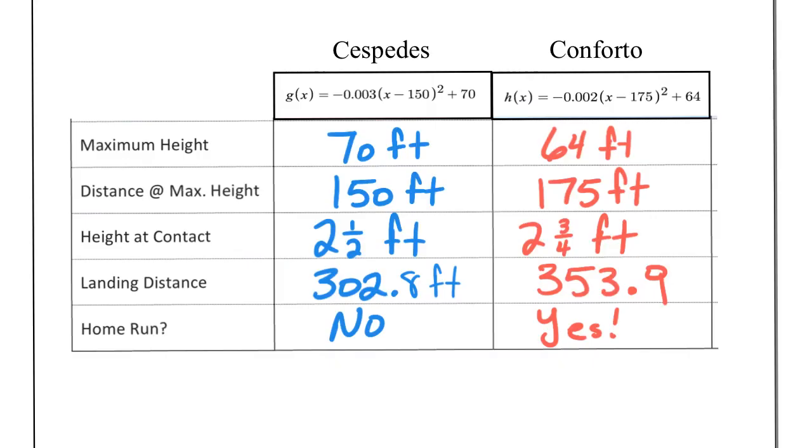This is what our completed table will look like. Remember, these top two rows we found just by looking at the vertex form that we were given, so no Desmos, no graphing calculator required for maximum height or distance at maximum height. For height at contact, you could find algebraically by plugging in a zero for x, or simply highlighting the y-axis on Desmos, or on your graphing calculator looking next to zero on your table. For landing distance, this is our positive root. This is where the graph hits the x-axis or where the function equals zero. Once again, you can highlight, you'll see a point, you simply have to click it. For any decimals, round to the nearest tenth.